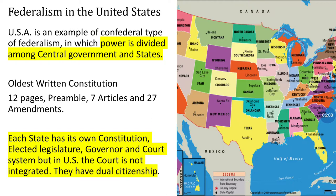When a person moves between states, documents such as a driving license or an election card have to be changed to reflect the new state citizenship. It is a different procedure to regulate and make the legislative assemblies in each state.